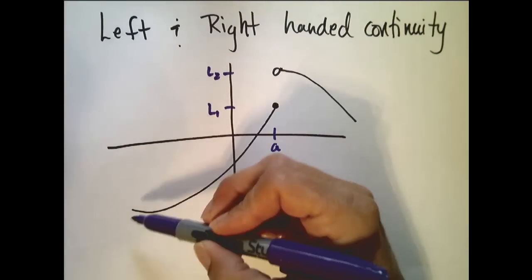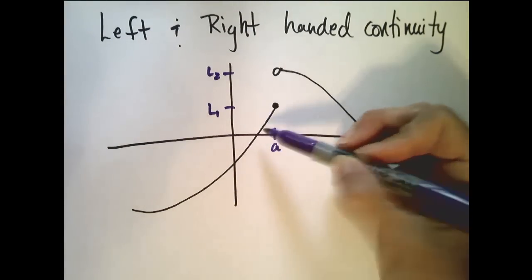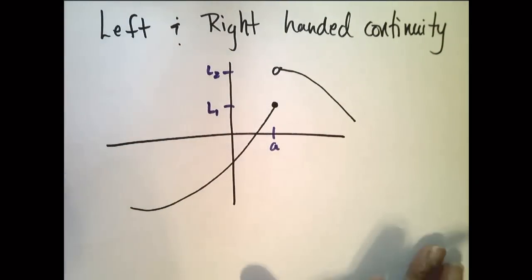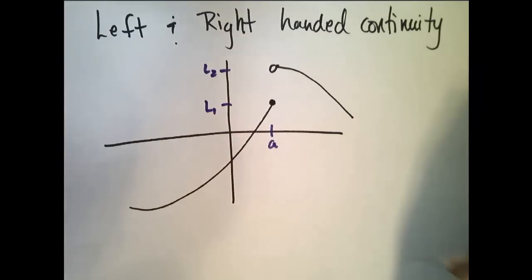However, it does have continuity on some kind of level on either side of a. So we actually do define what it means, left and right handed continuity.